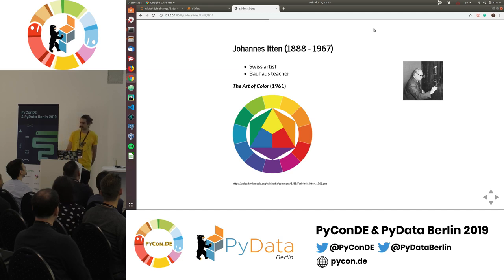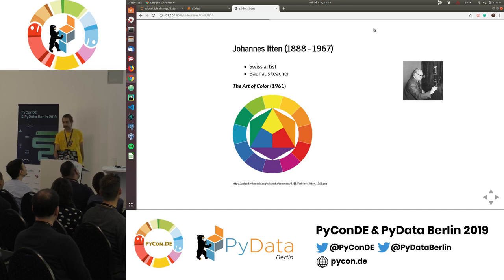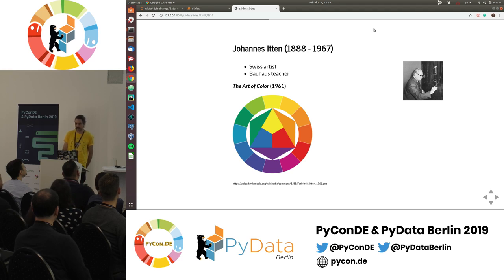Bauhaus is celebrating its hundredth anniversary this year — if you're in Berlin there are cool museums to check out. Bauhaus is mainly about architecture and design, but also about colors. Johannes Itten was a Swiss artist and teacher at the Bauhaus school who wrote a book called The Art of Color, where he created a color wheel and was the first to talk about primary, secondary, and tertiary colors. The three main primary colors — red, blue, and yellow — form triangles in the middle; mixing two primaries gives a secondary color, and mixing primary and secondary gives tertiary colors. These concepts are still widely used today.